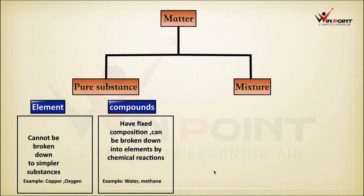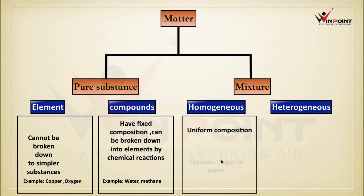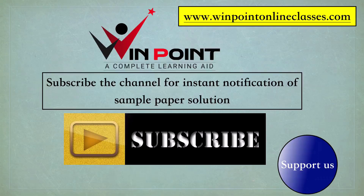Mixtures are of two types: homogeneous and heterogeneous. In a homogeneous mixture, the concentration is uniform everywhere — for example, sugar solution, where the concentration of sugar is the same throughout. In a heterogeneous mixture, the concentration differs in different regions — non-uniform composition. Example: sand and salt.